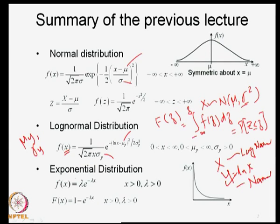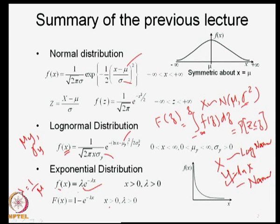We also looked at the exponential distribution. The PDF of the exponential distribution is given by f(x) = λe^(−λx). This has only one parameter λ, and λ is estimated by 1/μ. If you have a sample, you can estimate μ as the sample mean, then get λ, which defines the PDF. The CDF F(x) is then given by 1 − e^(−λx) for x > 0, λ > 0. The exponential distribution looks like a decaying exponential curve of f(x) versus x. That was to introduce a few typical probability density functions and the associated cumulative distribution functions.